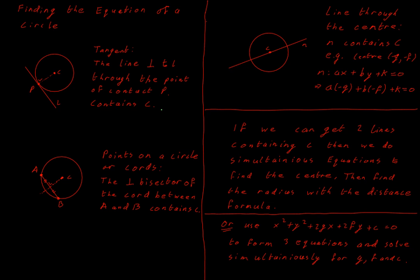Those are the two core pieces of information we need for finding the equation of a circle: the center and the radius. We find the center first by getting the equations of two lines that go through the center, and where they intersect gives us the coordinates of the center. Then we find the radius using our distance formula. Let's look at how we can get these lines that go through the center.